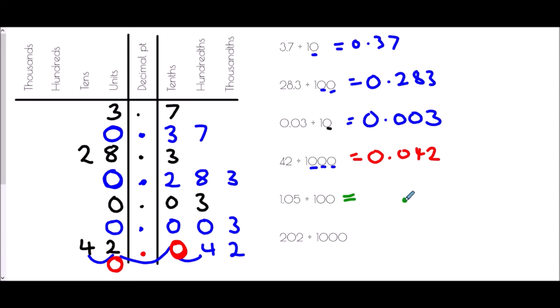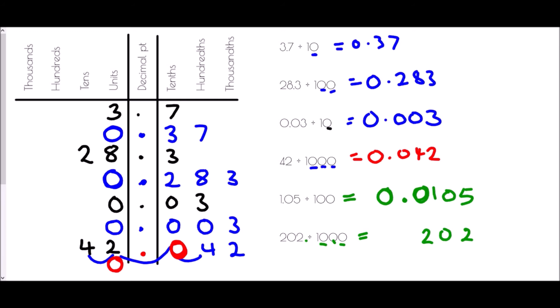For the last two without the diagram: 1.05 divided by 100 means digits move two places to the right. The 5 becomes the fourth digit after the decimal point, giving 0.0105. For 202 divided by 1000, all three digits move three places to the right beyond the decimal point, giving 0.202.